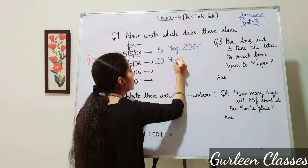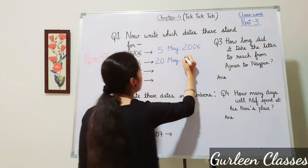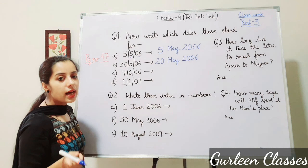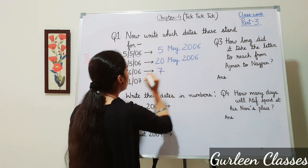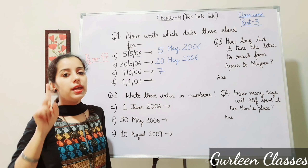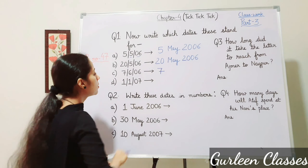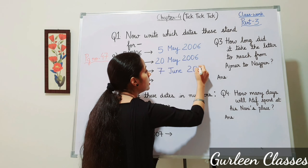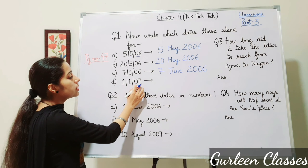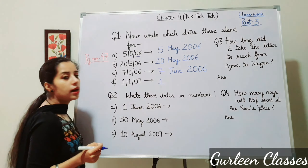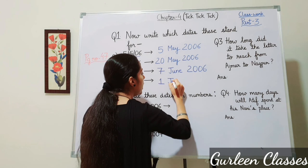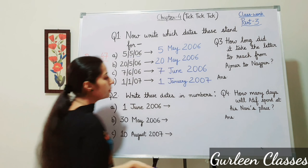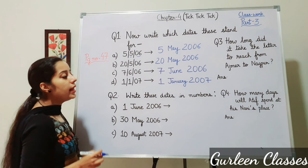Part C: 7/6/06 — 7 is the date, 6 is the month which is June, and 06 is 2006. Part D: 1/1/07 — 1 is the date, 1 is the month which is January, and 07 is the year 2007. Now Question 2: Write these dates in numbers. We have to write dates in the DD/MM/YY form.